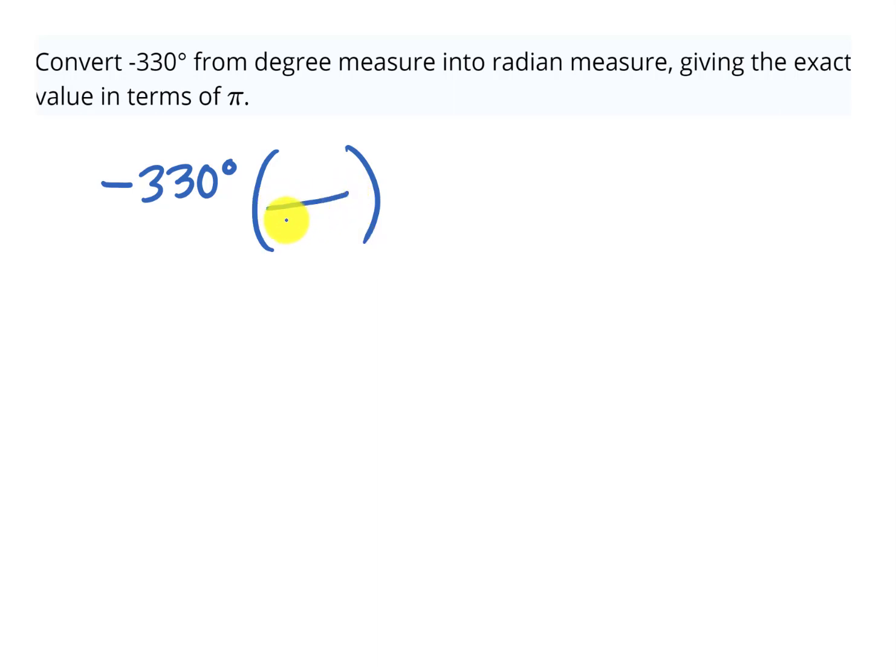Because I want to get rid of the degrees, I'm going to put the degrees on the bottom, so top and bottom will cancel, and the equivalent to 180 degrees in radians is pi. So there's our conversion fraction.